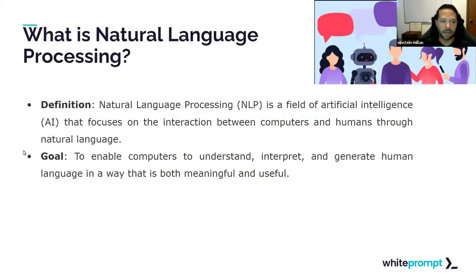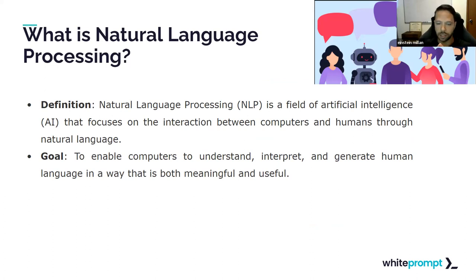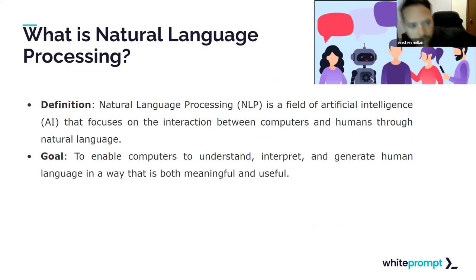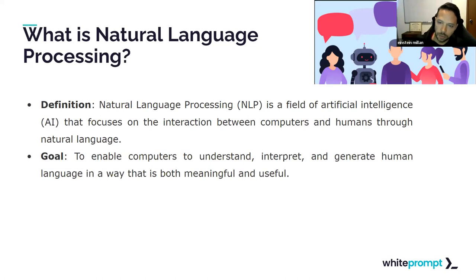Let's start with the definition of natural language processing. It's basically a field of artificial intelligence that focuses on the interaction between computers and humans through natural language. This enables us to understand, interpret, and generate human language in a way that's both useful and meaningful.